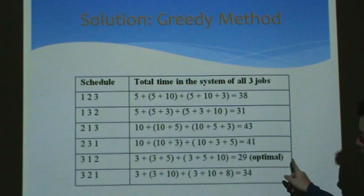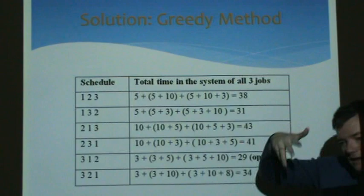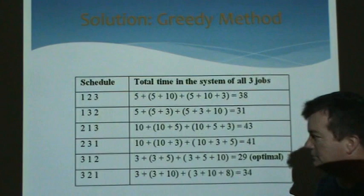That approach is called the greedy method. The greedy method is where you look at your data and say, let me grab the best thing and let that go first, then whatever I have left over, grab the best thing there, and continue until I hit the answer. Greedy methods sometimes work and sometimes they don't.